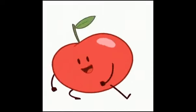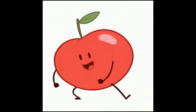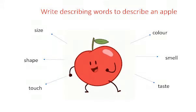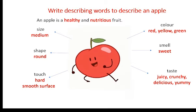In this activity you have to describe an apple to your friend who has never seen or eaten an apple. You can use the clues: size, shape, touch, color, smell, taste. An apple is a healthy and nutritious fruit. It is round shaped, medium sized fruit. It is hard and has a smooth surface. Red, yellow and green are the colors of apples available in the market. It smells sweet and is juicy, crunchy, yummy and truly delicious.